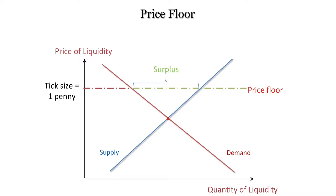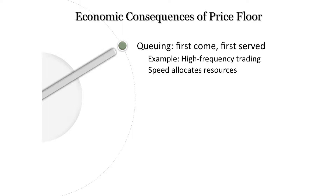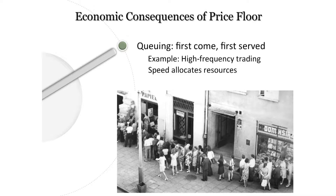So how do you allocate between those willing to provide liquidity? Speed. Because there's a general principle about price control: it's called queuing. You can think of these guys as high-frequency traders trying to get something — first come, first serve.